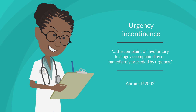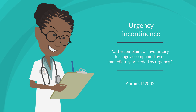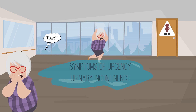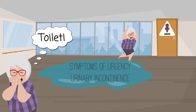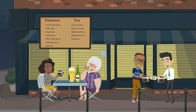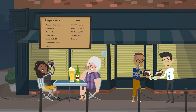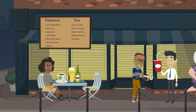Now let's turn to urgency urinary incontinence. Urgency incontinence refers to involuntary leakage accompanied by a sense of urgency to void. The leakage results from sudden involuntary bladder contractions. Symptoms of urgency urinary incontinence include inability to defer voiding and frequency of urination. Common bladder irritants include coffee, tea, alcohol, and soda pop. These irritants bother the detrusor muscle, causing spasms when the patient does not need to void.